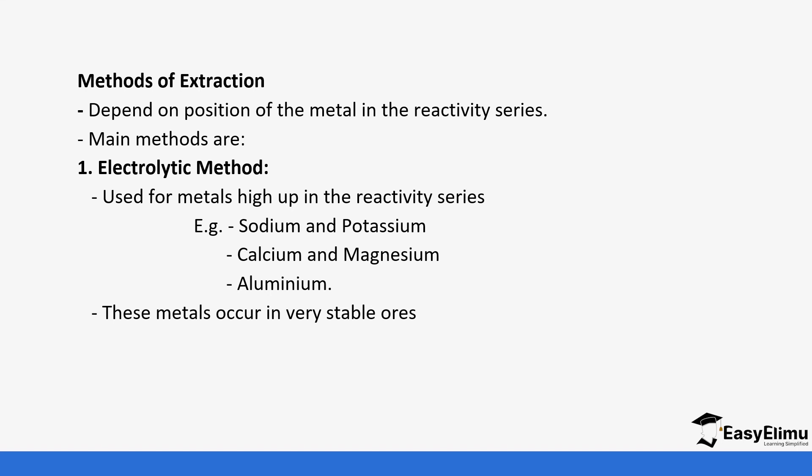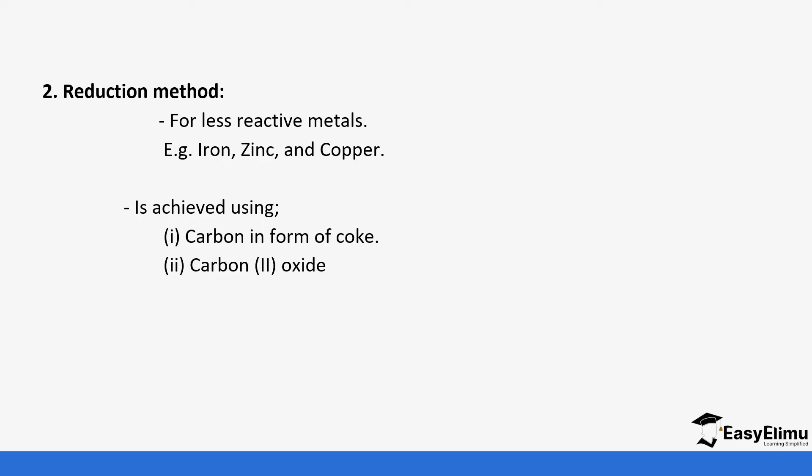The second method is the reduction method. It is used for less reactive metals like iron, zinc, copper, and lead. It is achieved using carbon in the form of coke. The function of coke is to provide carbon that is used for reducing. Coke also helps in formation of carbon dioxide when heated in insufficient air. Hydrogen can also be used in some cases to reduce these ores. Oxidation is also used followed by reduction.